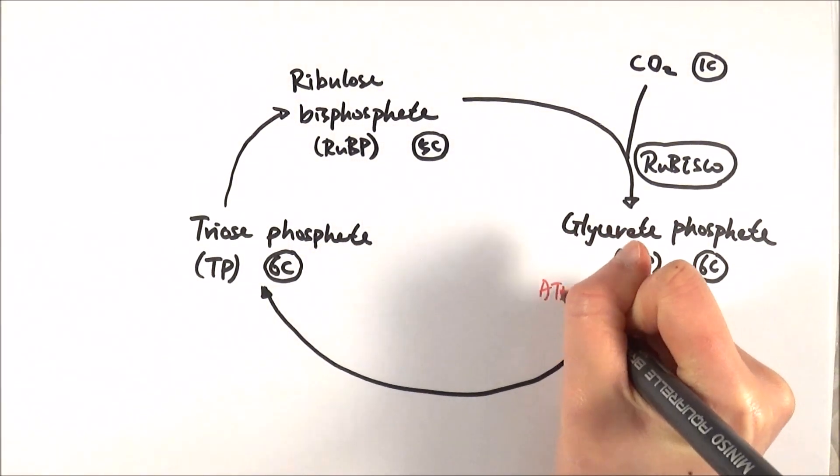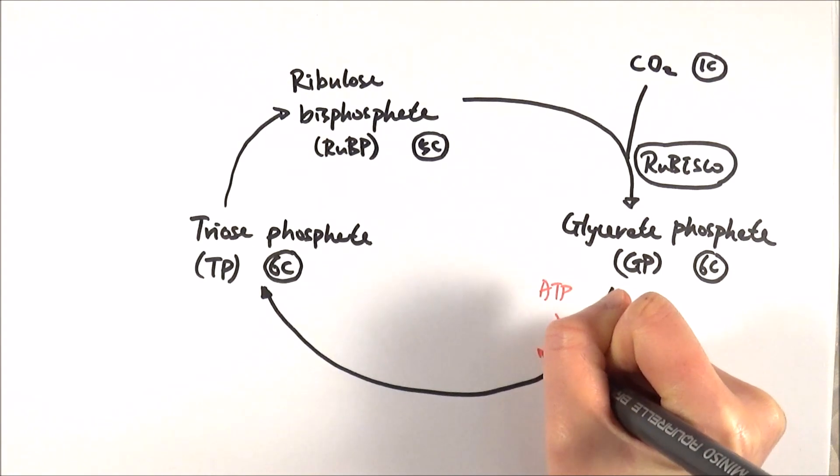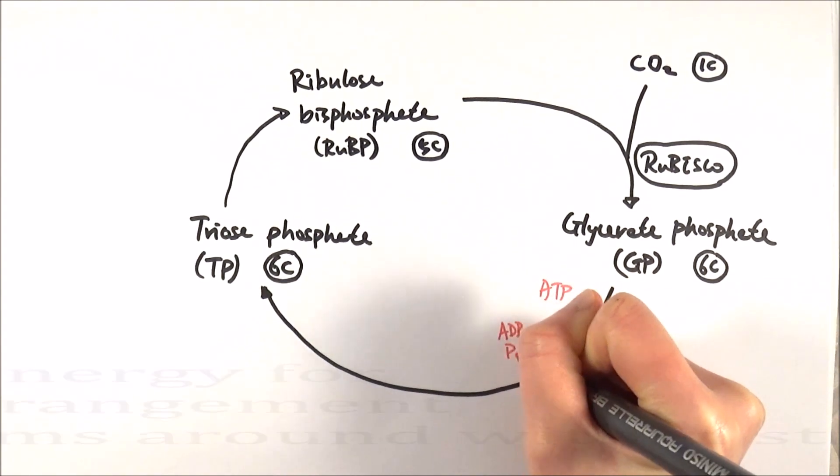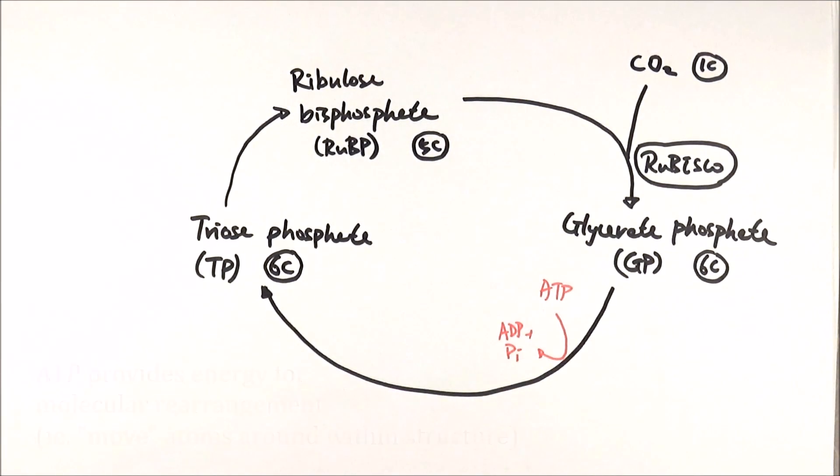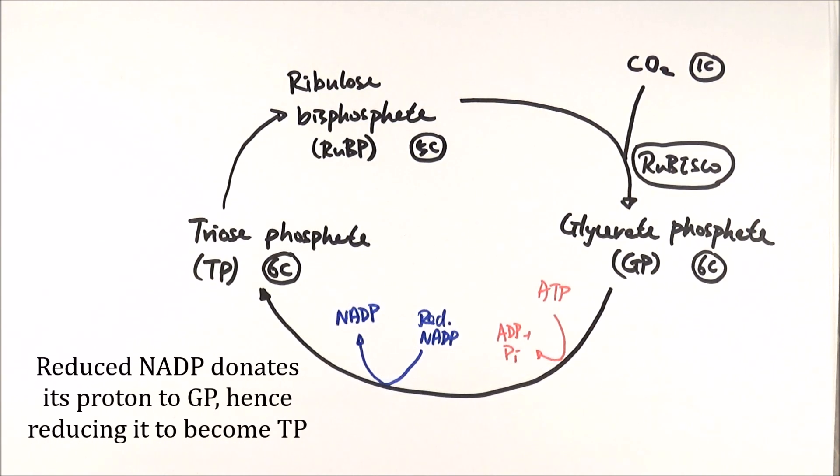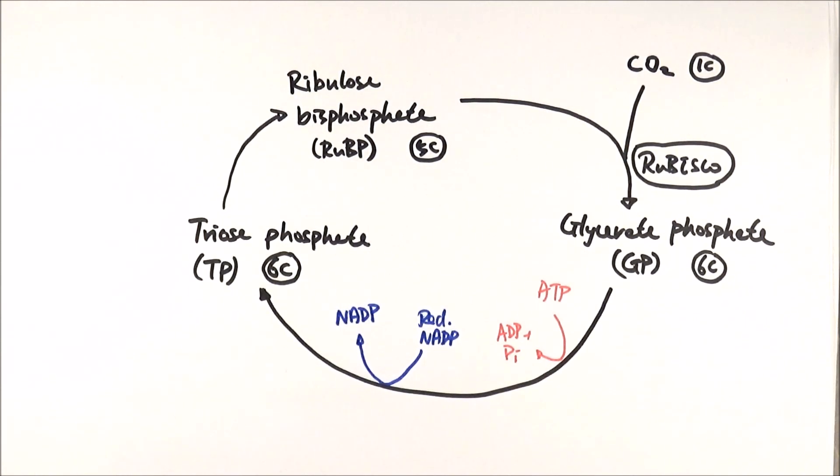and it gets converted into ADP, and the reason for that is to provide the energy for molecular rearrangement. So reduced NADP is here to reduce GP to TP. It donates one of its protons to actually change the structure.